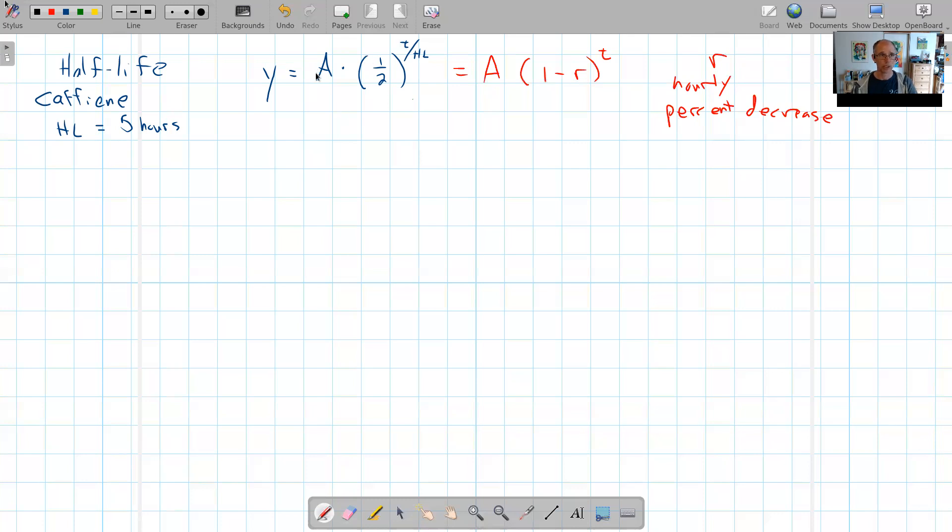So that gives me one-half as the base to the power of one-fifth, one over that half, or T over that half-life, T over five. Now the starting amount is the same in both of these, so I can divide that out. So on the other side, I really only need to consider one minus R to the power of T. And I'm looking for the hourly percent decrease because T is an hour, so I might as well simplify this and let T equal one.